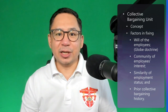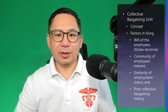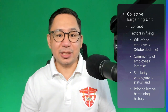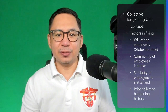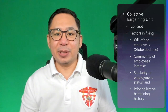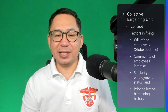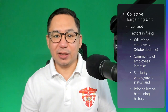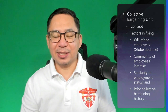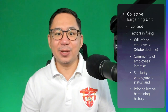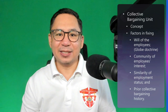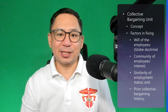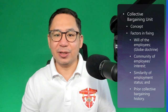The Community of Interest Rule, also known as the Substantial Mutual Interest Rule, holds that the main consideration in fixing the appropriate collective bargaining unit is the affinity and unity of the employees' interests, such as substantial similarity of working conditions.